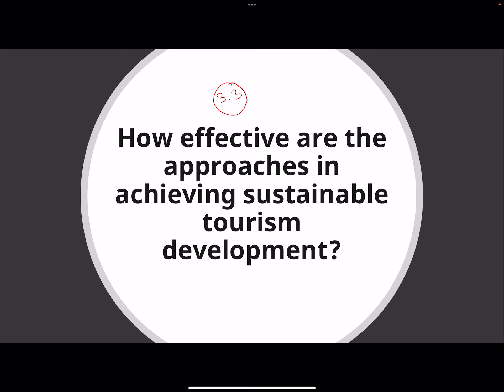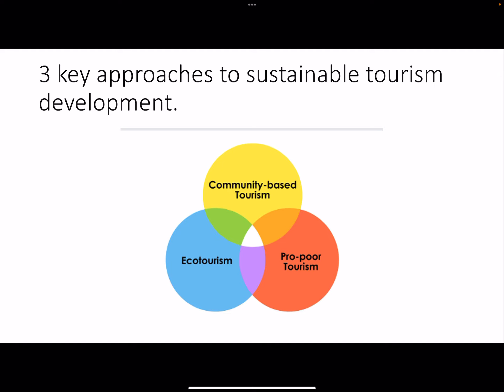For this video we will be looking at Topic 3.3 of Cluster 2 - Tourism. This portion deals with how effective approaches in achieving sustainable tourism development. There are three key approaches, and when they all intersect at the 'Goldilocks point,' you will hopefully be able to see that being at the midpoint of these three approaches allows you to have sustainable tourism development in the long run.